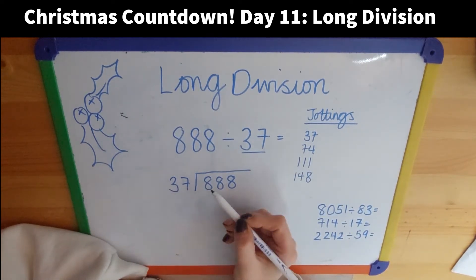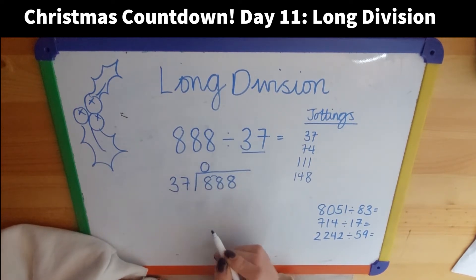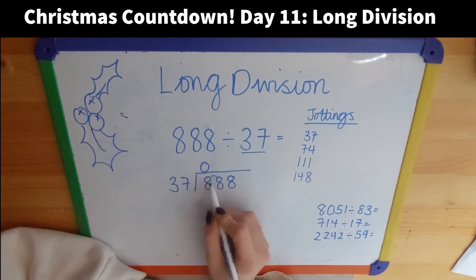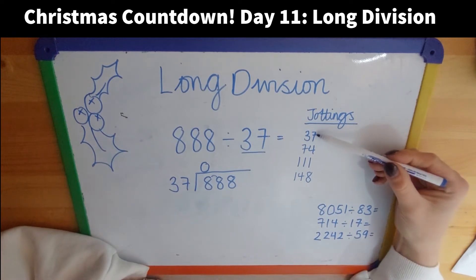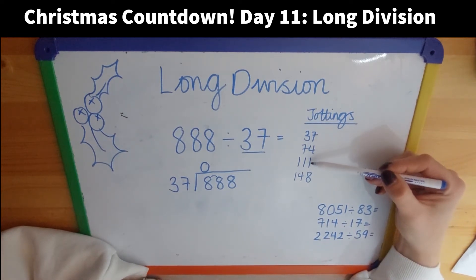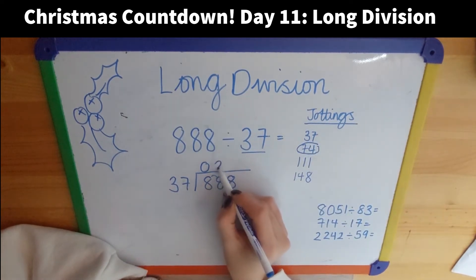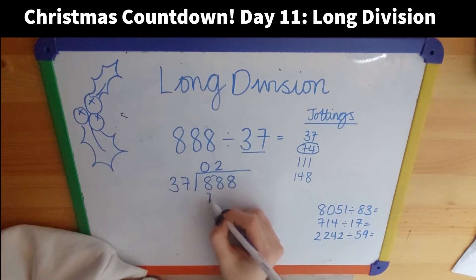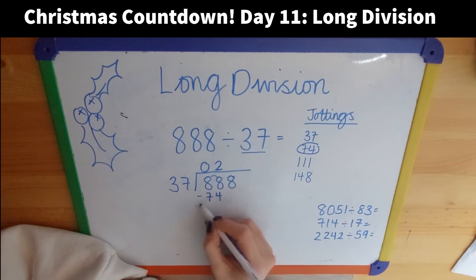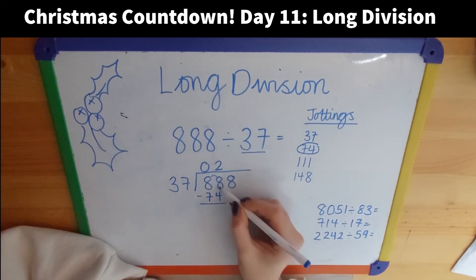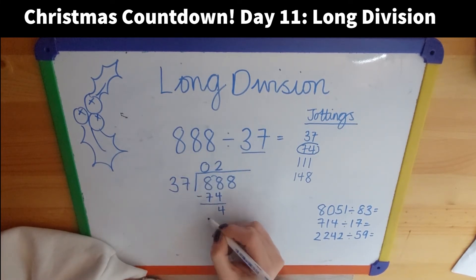37 goes into 8 — I can't do that. So as you saw in the previous video, to show that I'm looking at this two-digit number, I do a little bridge. So 37 goes into 88. Now I can take a look at my jottings: 37, 74, 111. So I know that it goes in twice, so I will circle that. I need to put my 74 underneath my number because subtracting this is what gives me my remainder. So 8 take away 4 gives me 4, and 8 take away 7 gives me 1.